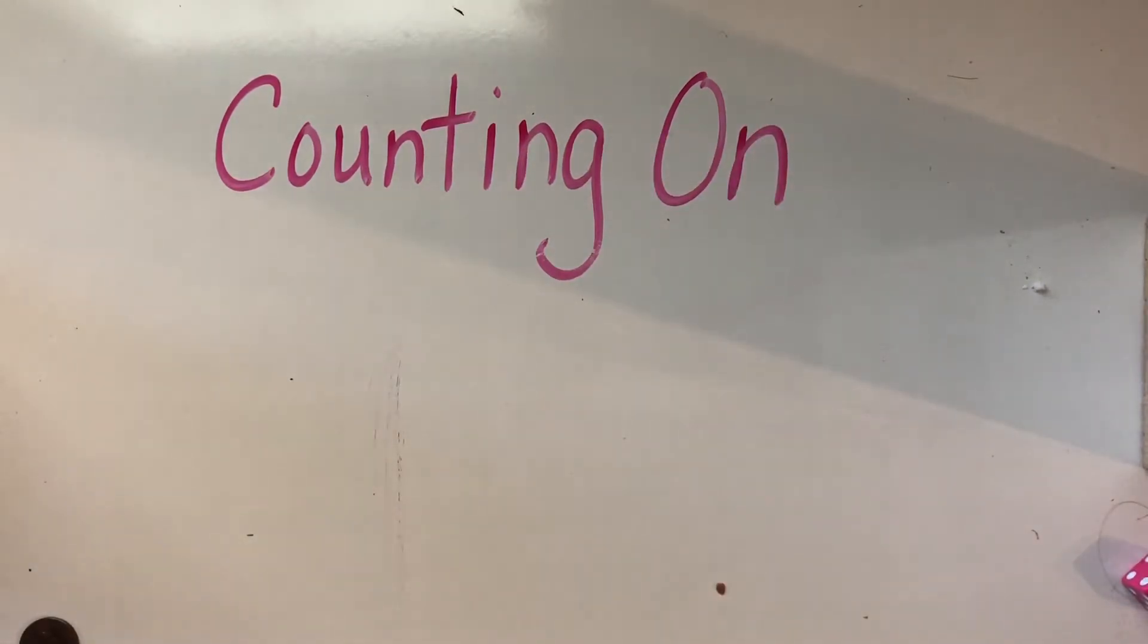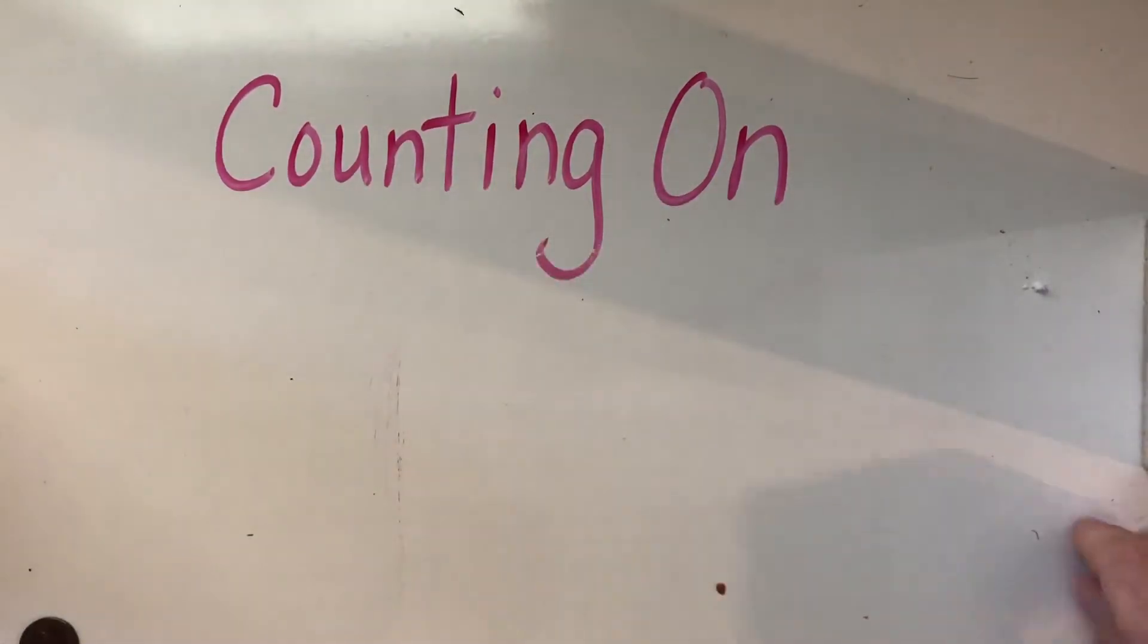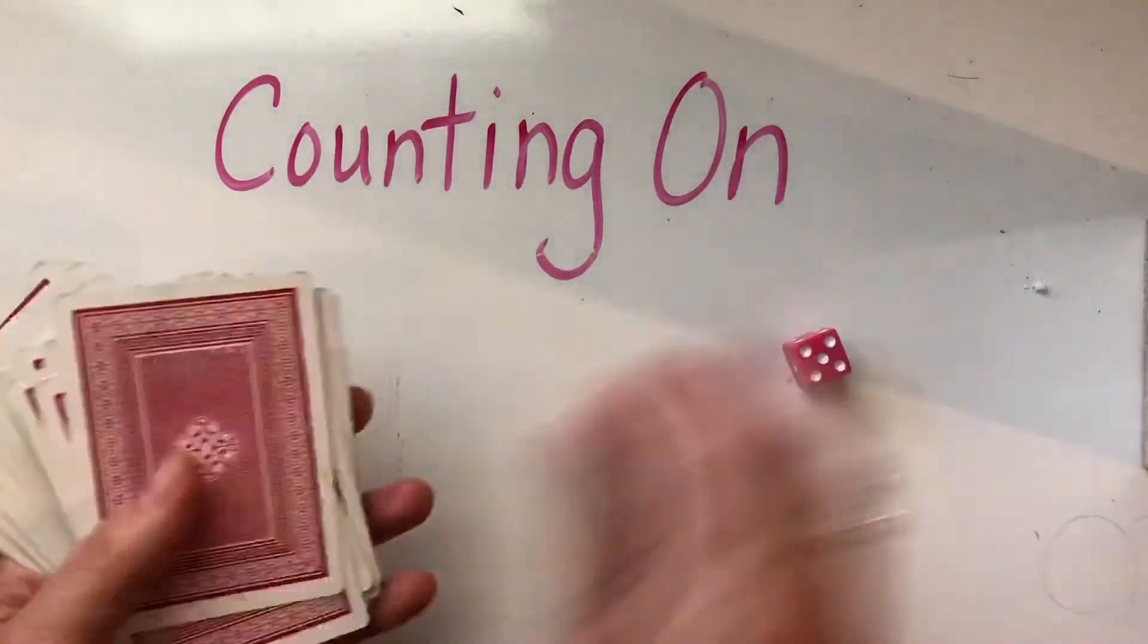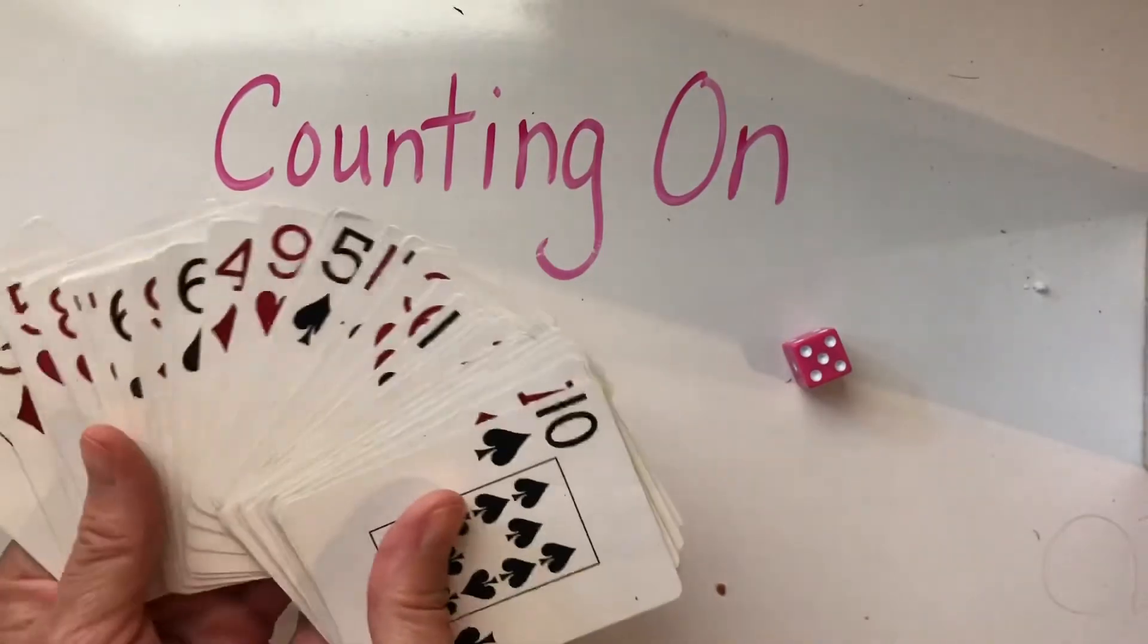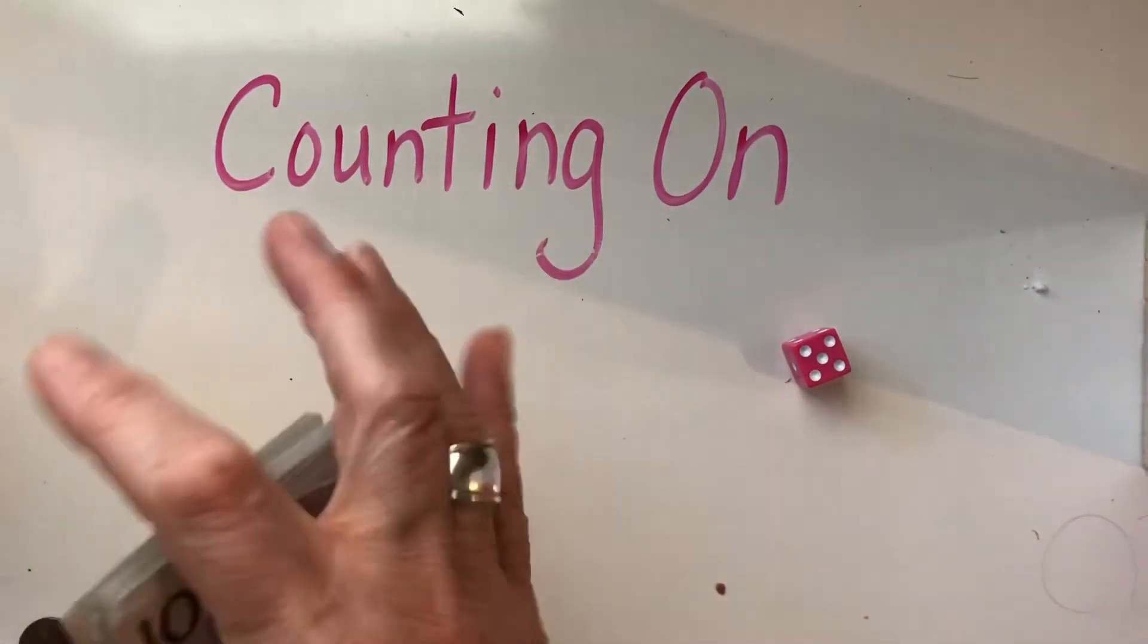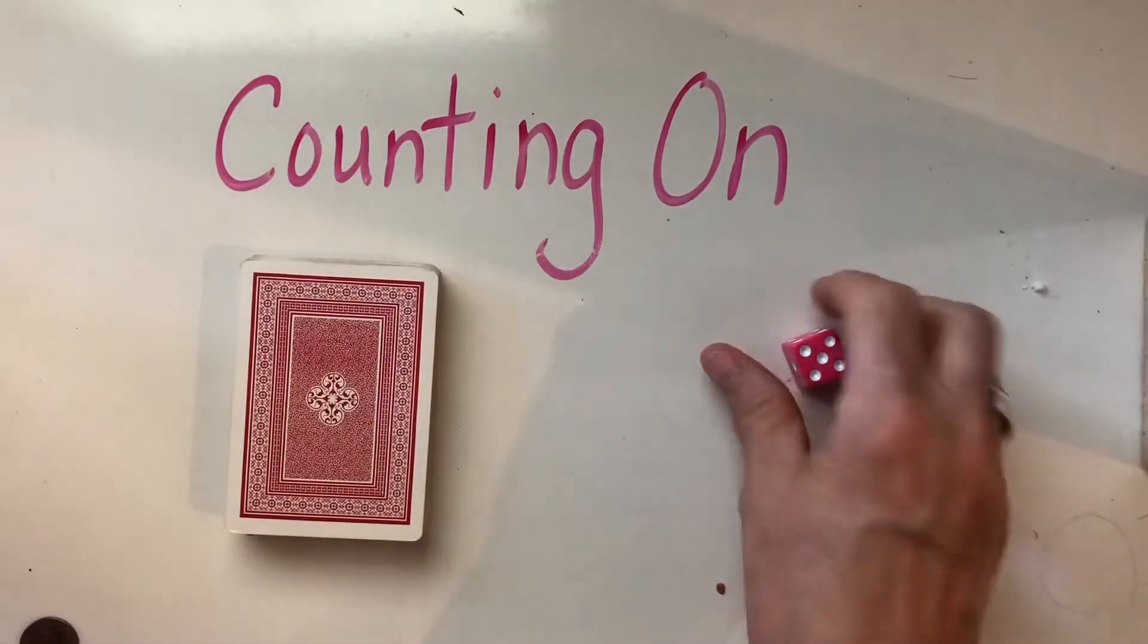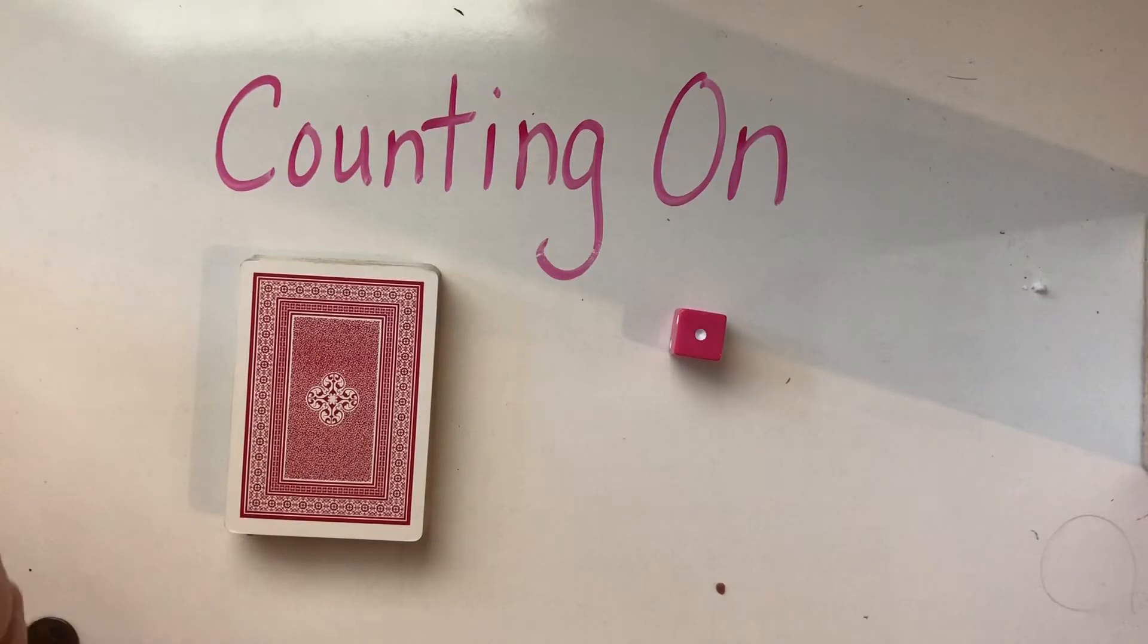And the first one, you're going to need a deck of cards and a die. Now, I took out all the face cards, so there are no kings, queens, or jacks in my deck. So I'm just going to put them in a pile face down. Roll your dice.